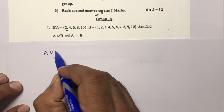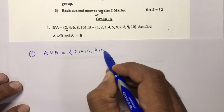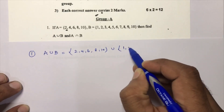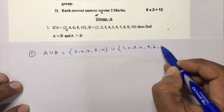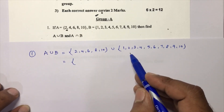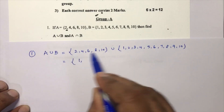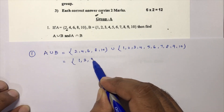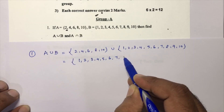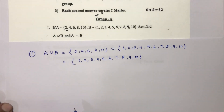The first question asks us to find A union B and A intersection B. Here A is {2, 4, 6, 8, 10} and B is {1, 2, 3, 4, 5, 6, 7, 8, 9, 10}. For union, we write all the elements, but if something is common we cannot repeat elements in a set. So A union B is {1, 2, 3, 4, 5, 6, 7, 8, 9, 10}.